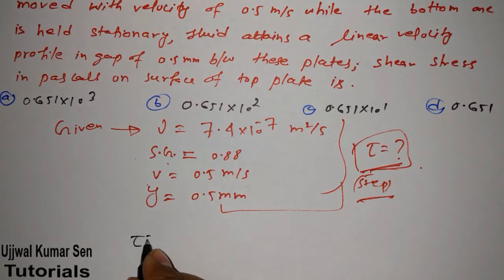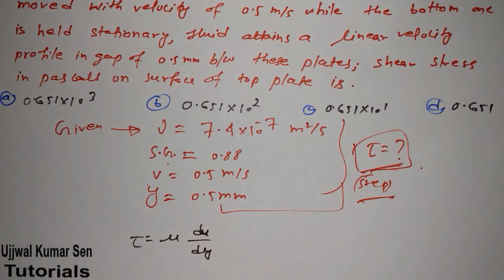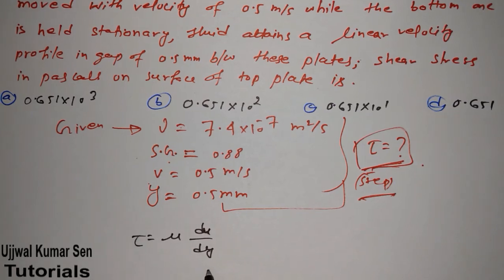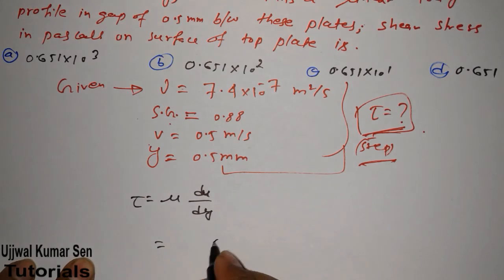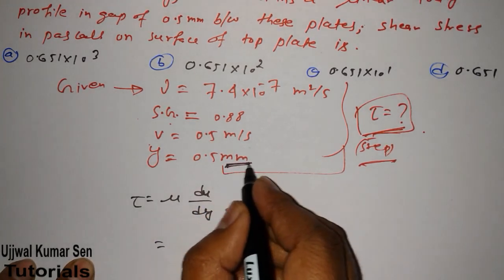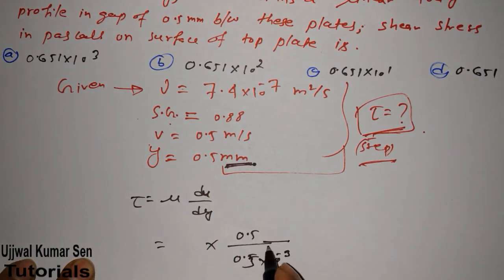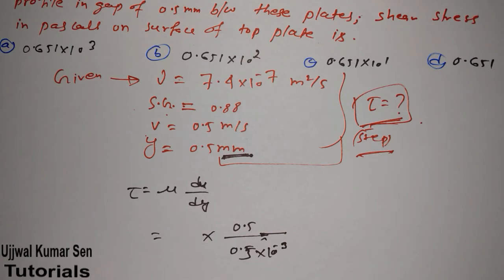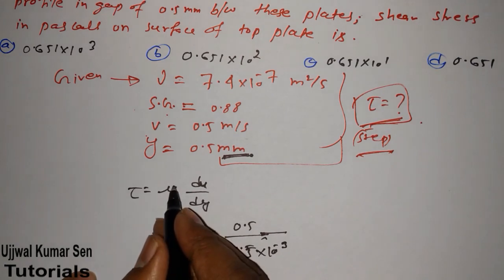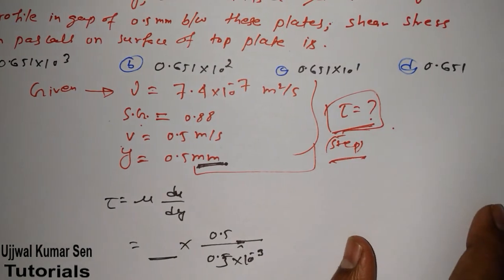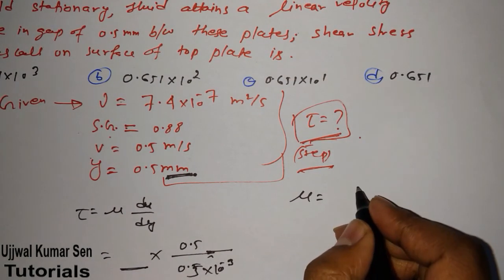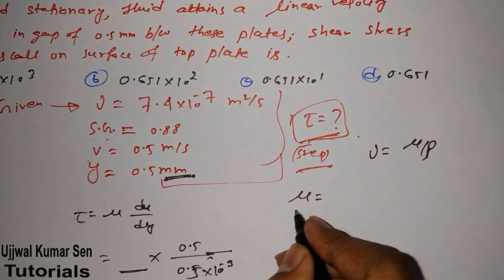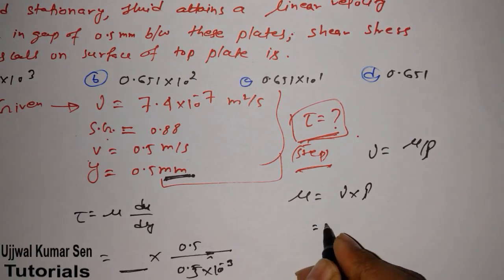The formula is tau = mu × (du/dy). We have to find tau. Mu is not directly given, but du is 0.5 and dy is 0.5 mm — we must convert mm to meters by multiplying by 10⁻³. Always concentrate on units while solving numerical problems. The challenge here is to find dynamic viscosity mu, also called coefficient of viscosity.